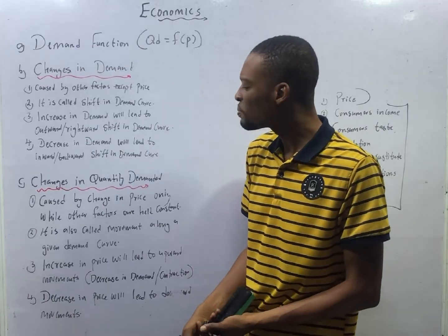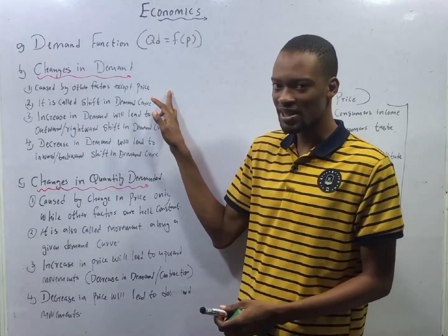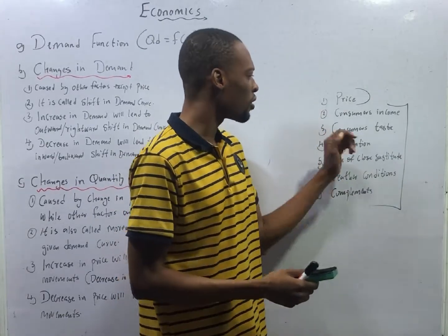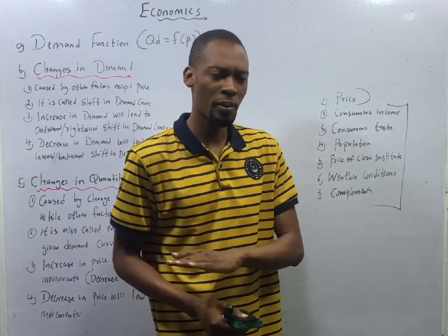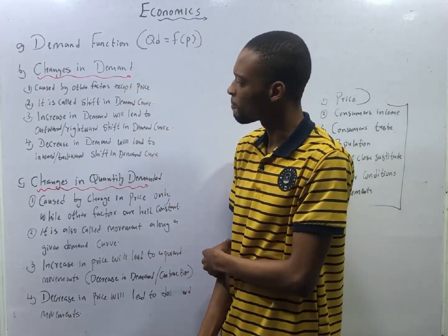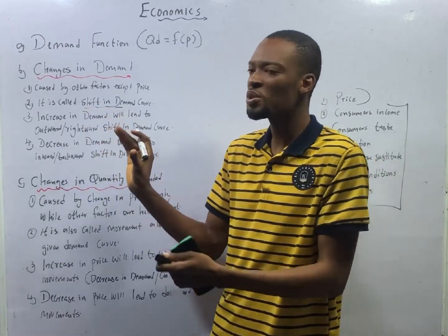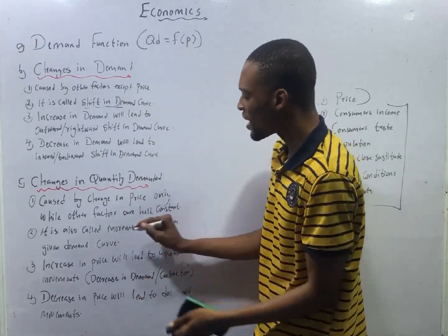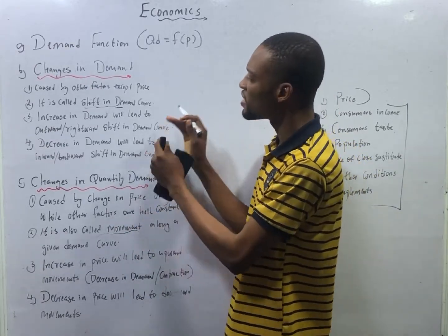Changes in quantity demanded is called movement along a given demand curve. Changes in demand, on the other hand, is caused by other factors except price — meaning the effects of consumer's income, consumer's taste, population, weather conditions, and complements on demand, without considering price. Changes in demand is referred to as a shift in demand, and it is measured by a shift in the demand curve. Changes in quantity demanded is measured by movement along the demand curve.